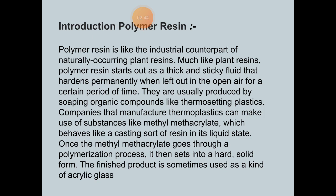Polymer resin is like the industrial counterpart of naturally occurring plant resins. Much like plant resins, polymer resins start out as a thick fluid that hardens permanently when left out in the open air for a certain period of time. They are usually produced by processing organic compounds like thermosetting plastics. Companies that manufacture thermoplastics can make use of substances like methyl methacrylate, which behaves like a casting resin in its liquid state. Once methyl methacrylate goes through a polymerization process, it sets into a hard solid form.